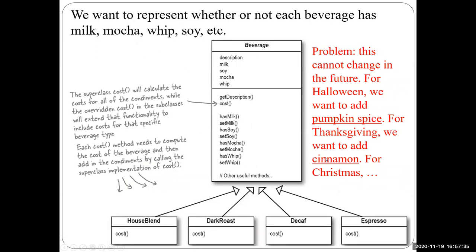As time evolves and we go to Starbucks, we see that we can add additional features to our coffee: we can add milk, mocha, soy milk. And there are seasonal additions — for Halloween we add pumpkin spice, for Thanksgiving cinnamon, for Christmas candy cane seasoning, for Easter egg flavor, and so on.